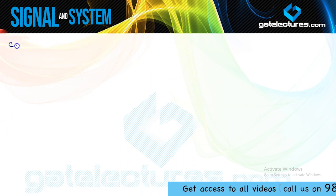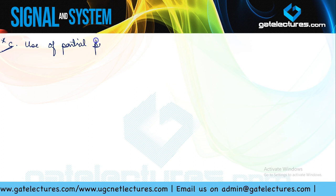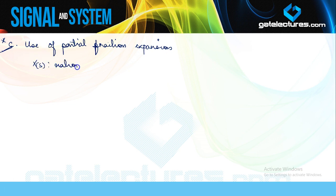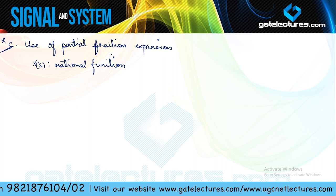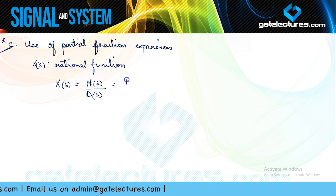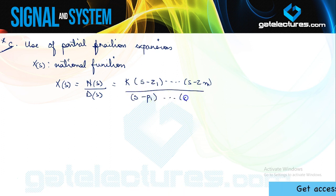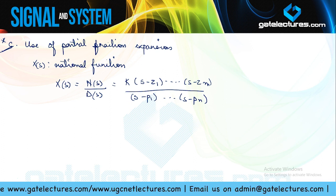The third way, which is most widely used, is the use of partial fraction expansion. In this technique, we note that the Laplace transform X(s) is generally going to be a rational function — it has some factors in the numerator called zeros and some factors in the denominator called poles. We can express X(s) as one function in the numerator and one in the denominator, which can be further expressed as a product of m zeros and n poles. If we use a simple technique based on partial fraction expansion, we can easily find the inversion of X(s).